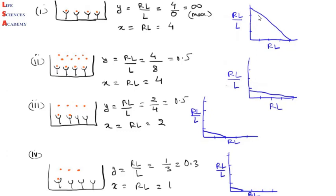In case number two, the ligand concentration is very high and the receptor has also been saturated. For the y-axis, RL/L equals 4 divided by 8: 4 is the receptor-ligand complex and 8 is the free ligand concentration. This value comes to 0.5, and on the x-axis there is 4. In this case the slope decreases. So we can conclude that if the receptor has high affinity for the ligand, the slope is high initially but decreases as the ligand concentration increases.